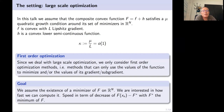Since we deal with large-scale optimization, we only consider first-order optimization methods: we only access the gradient and value of the function, not higher-order information such as the Hessian matrix. In large-scale optimization, computing the gradient is already computationally demanding enough.